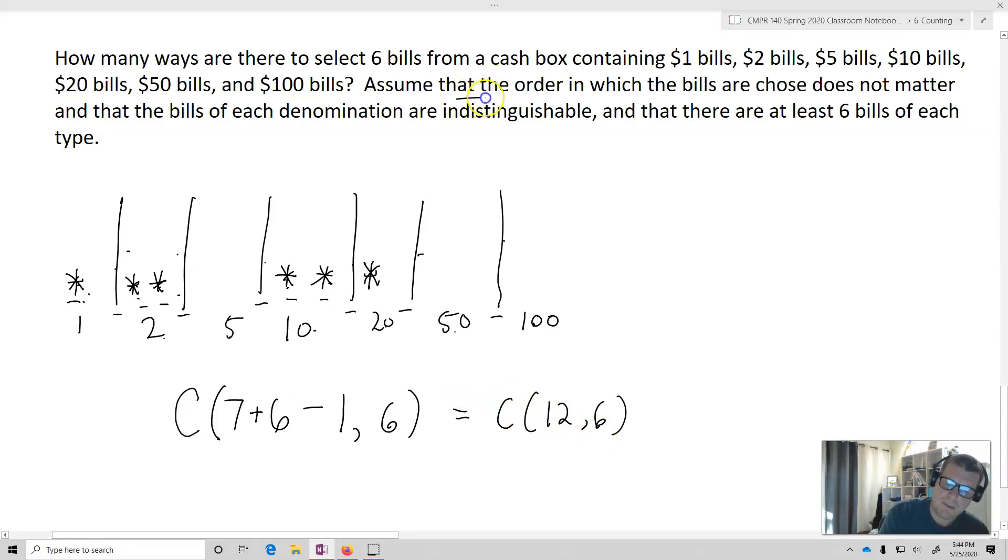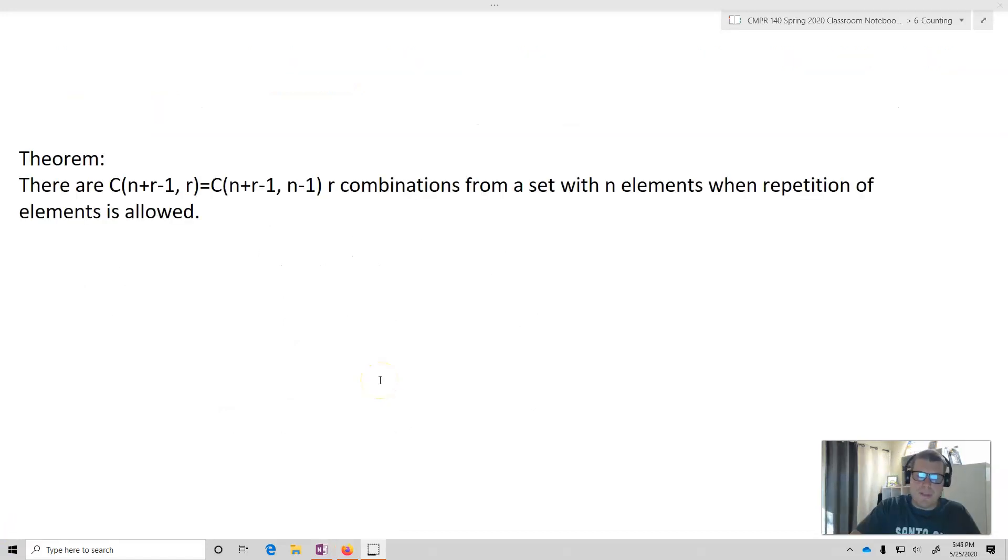Notice a couple of things. Assume that the order in which the bills are chosen does not matter, and the bills are indistinguishable. So given that that's the case, when we have a problem in which we're doing something like this, we can envision it using these stars and bars. Our theorem states there are C of n plus r minus one choose r, which equals C of n plus r minus one choose n minus one, r combinations from a set with n elements when repetition of the elements is allowed. And that finishes up the lecture. That's it.